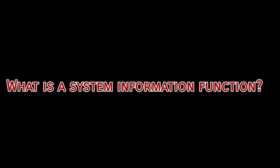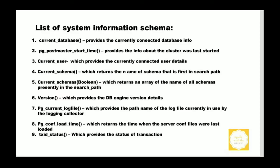There are many system available functions for each user, and these functions can be used by normal users as well. These functions are used to extract some user or session information. For example, if we are connected to the PostgreSQL cluster and want to view which database we are currently connected to, we can use the current_database system information function, which provides the currently connected database information.